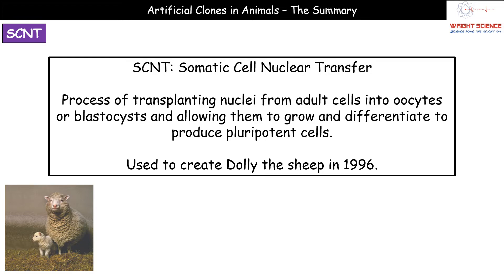The second process is called SCNT, or somatic cell nuclear transfer. The basic overview is that we're going to take a nucleus from an adult cell and then insert it into another cell — basically creating a clone of whatever animal we took the original nucleus from. This was how we created the most famous of all our clones, Dolly the Sheep, back in 1996.